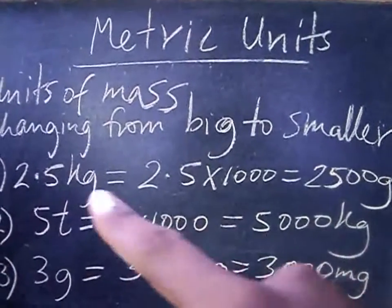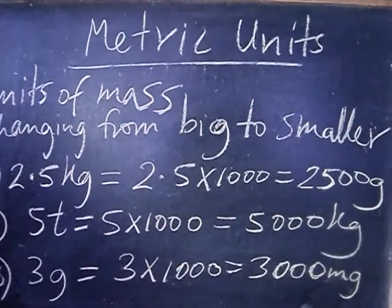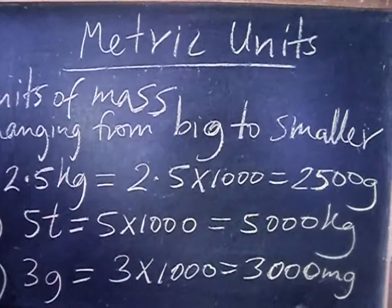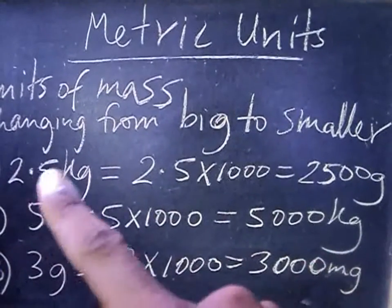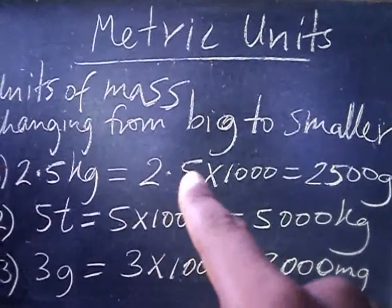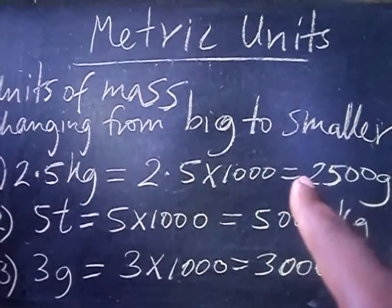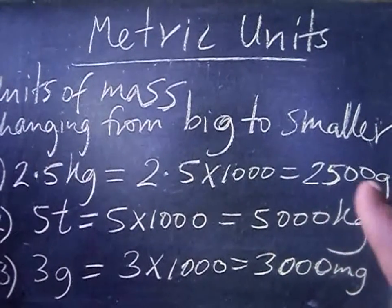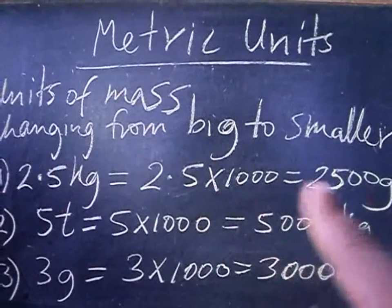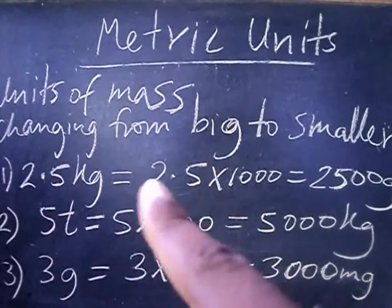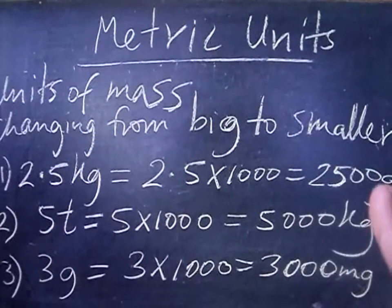For example, 2.5 kilograms converted into grams. You have to remember how many grams are in one kilogram — it's one thousand grams. So 2.5 multiplied by a thousand gives you two thousand five hundred grams. You shift the decimal point three times to the right, placing two zeros.